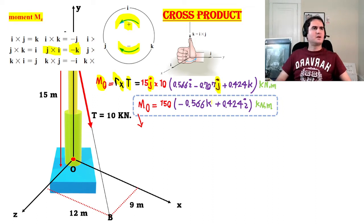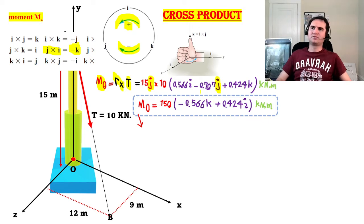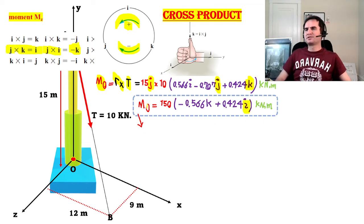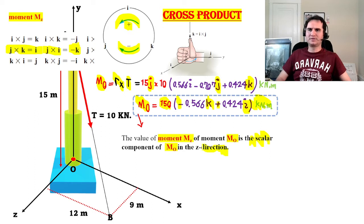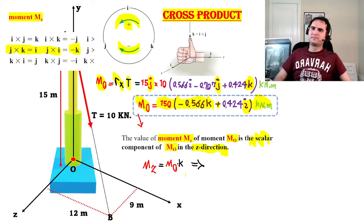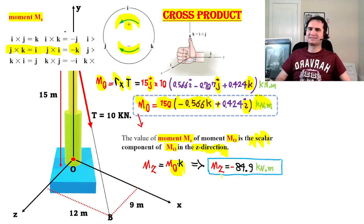Any unit vector crossed with itself in a cross product gives zero, so j × j = 0. And j × k gives i. Therefore, moment about O equals 150 times (−k + i) kilonewton-meters. The value of MZ — the scalar component of MO in the Z direction — is MZ = −84.9 kilonewton-meters. The negative sign means the moment MZ is in the negative Z direction.